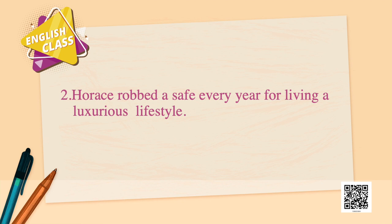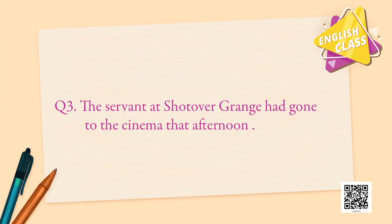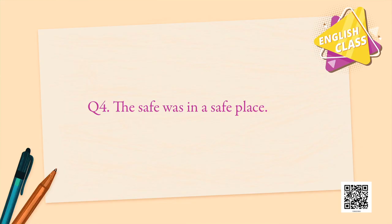False — because he used to steal, so he was not respectable. Next: Horace robbed a safe every year for living a luxurious lifestyle. This line has two parts — one is true and one is false — so the answer is false, because even if one piece of information is incorrect it is false. The servant at Shotover Grange had gone to the cinema that afternoon — true. The safe was in a safe place — false, because everybody knew where the safe was; it was behind a painting.